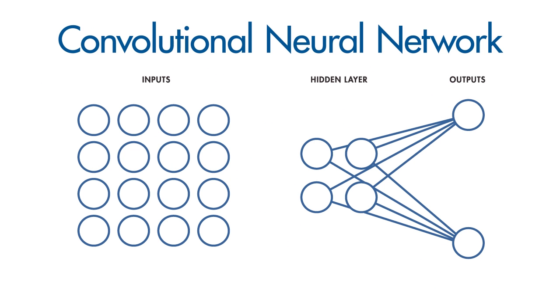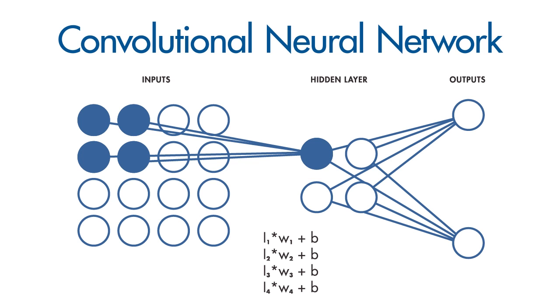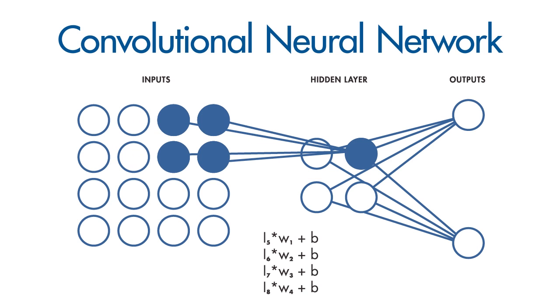However, in the case of CNNs, the weights and bias values are the same for all hidden neurons in a given layer.